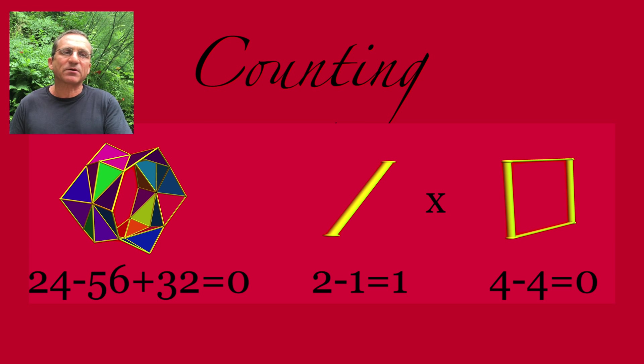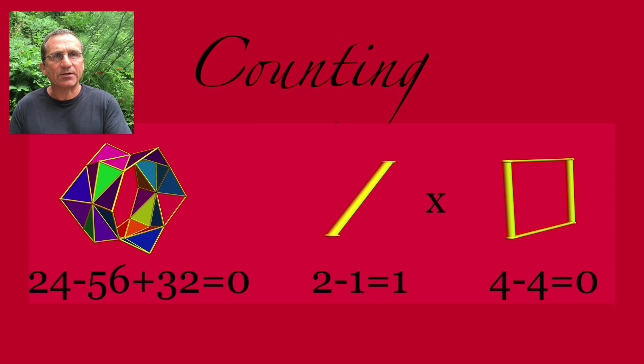A cylinder, for example, is the product of an interval with a circle. The Euler characteristic is obtained by counting vertices, edges, triangles, etc.